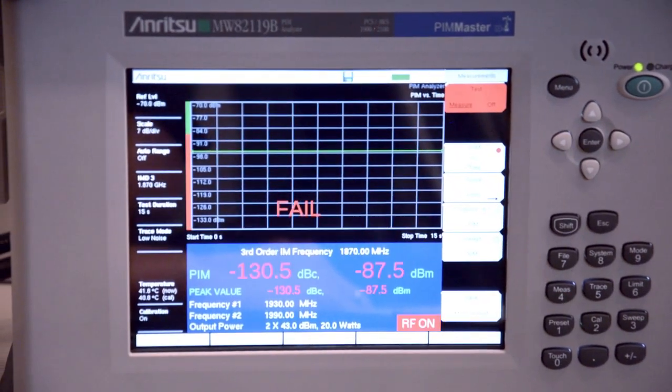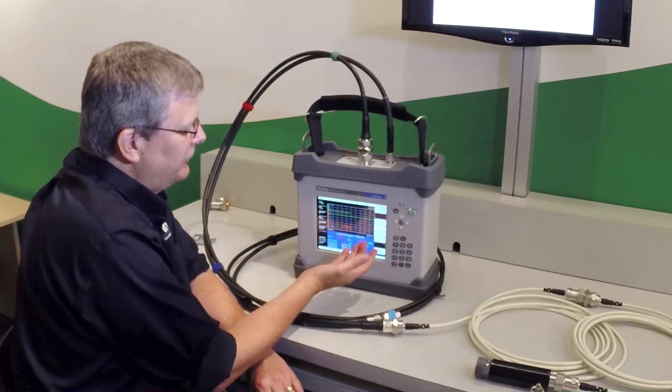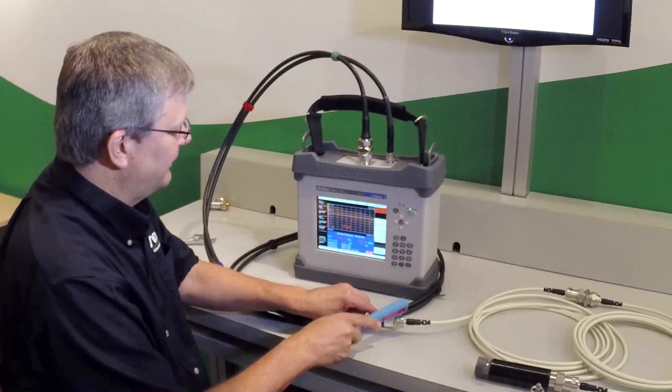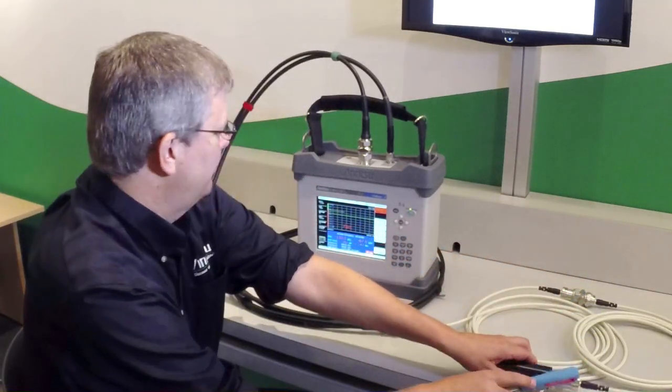We start the test and we see that we have a failure. If I was doing this test with a traditional PIM analyzer, the first thing I would do is start tapping on the connections trying to find the location of that PIM source.